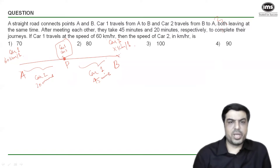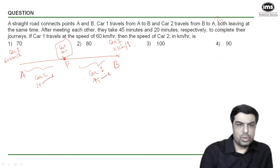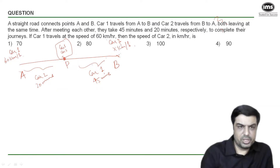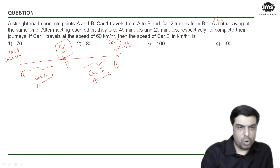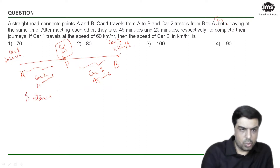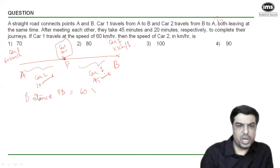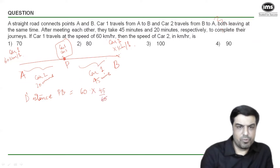We'll use the formula: distance = speed × time. Car one covers the stretch PB in 45 minutes at 60 km/h. Since speed is in km/h, we convert 45 minutes to hours: 45/60. So distance PB = 60 × (45/60) = 45 kilometers.